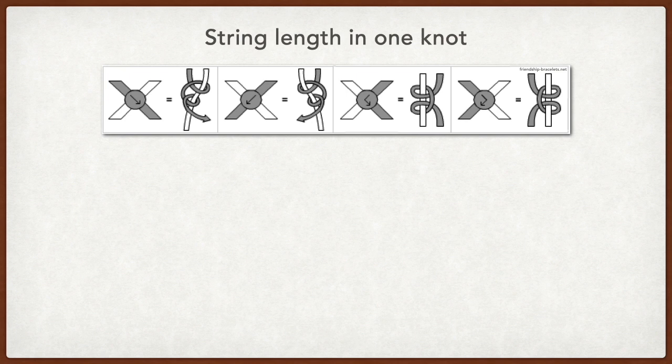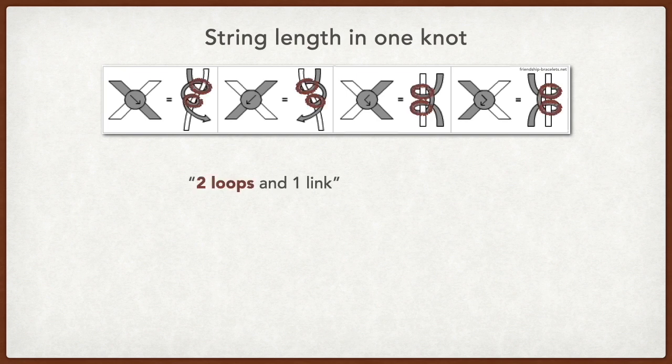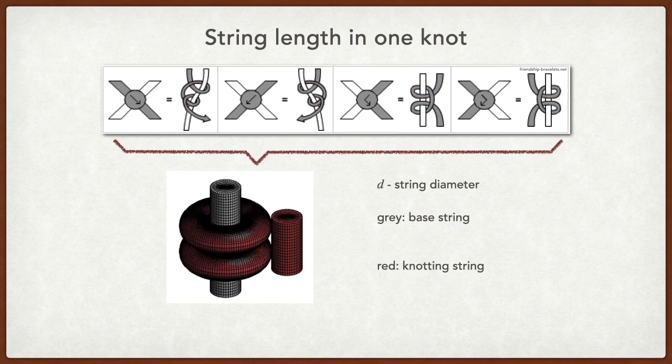There are four basic knots: forward knot, backward knot, forward-backward knot, and backward-forward knot. They all have a common feature. The knotting string makes two loops around the base string, and these two loops are connected by a linking piece. So we can build a geometrical model to represent all four basic knots. We assume that the string has a constant diameter d.